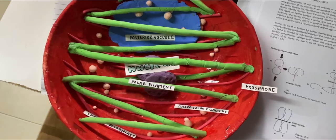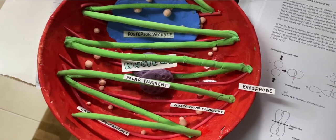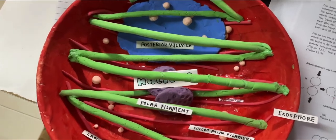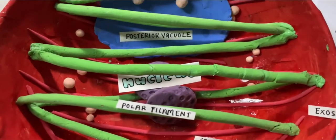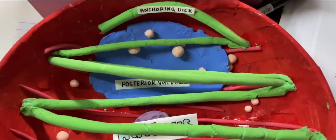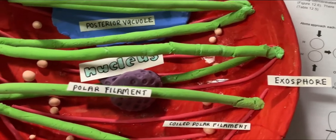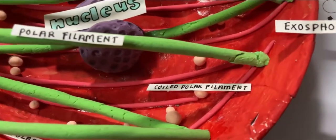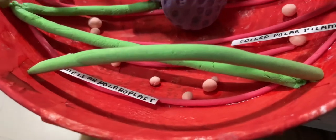Now, let's take a closer look at this Microsporidia model. That is the nucleus, the posterior vacuole, the polar filament, and the lamellar polaroplast.